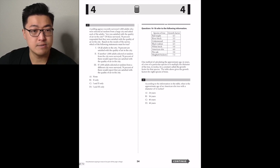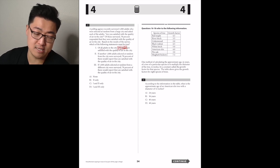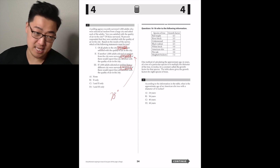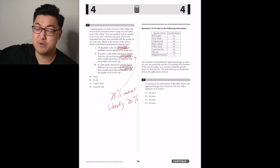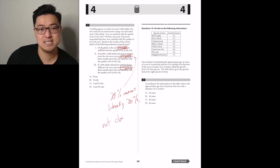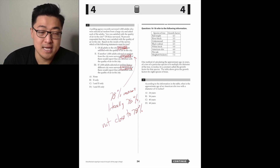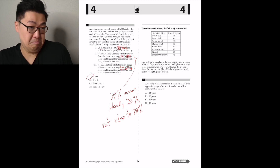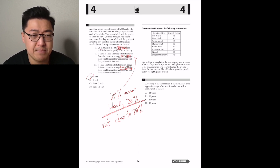A polling agency surveyed 1,000 adults selected at random from a large city, asking if they were satisfied with air quality. Of those surveyed, 78% responded they were satisfied. Which statement must be true? I don't think we can say the total population is exactly 78% — it'll be close but not exact. And the next survey won't literally produce exactly 78 — it doesn't say 'roughly.' So I think none of them are necessarily true.